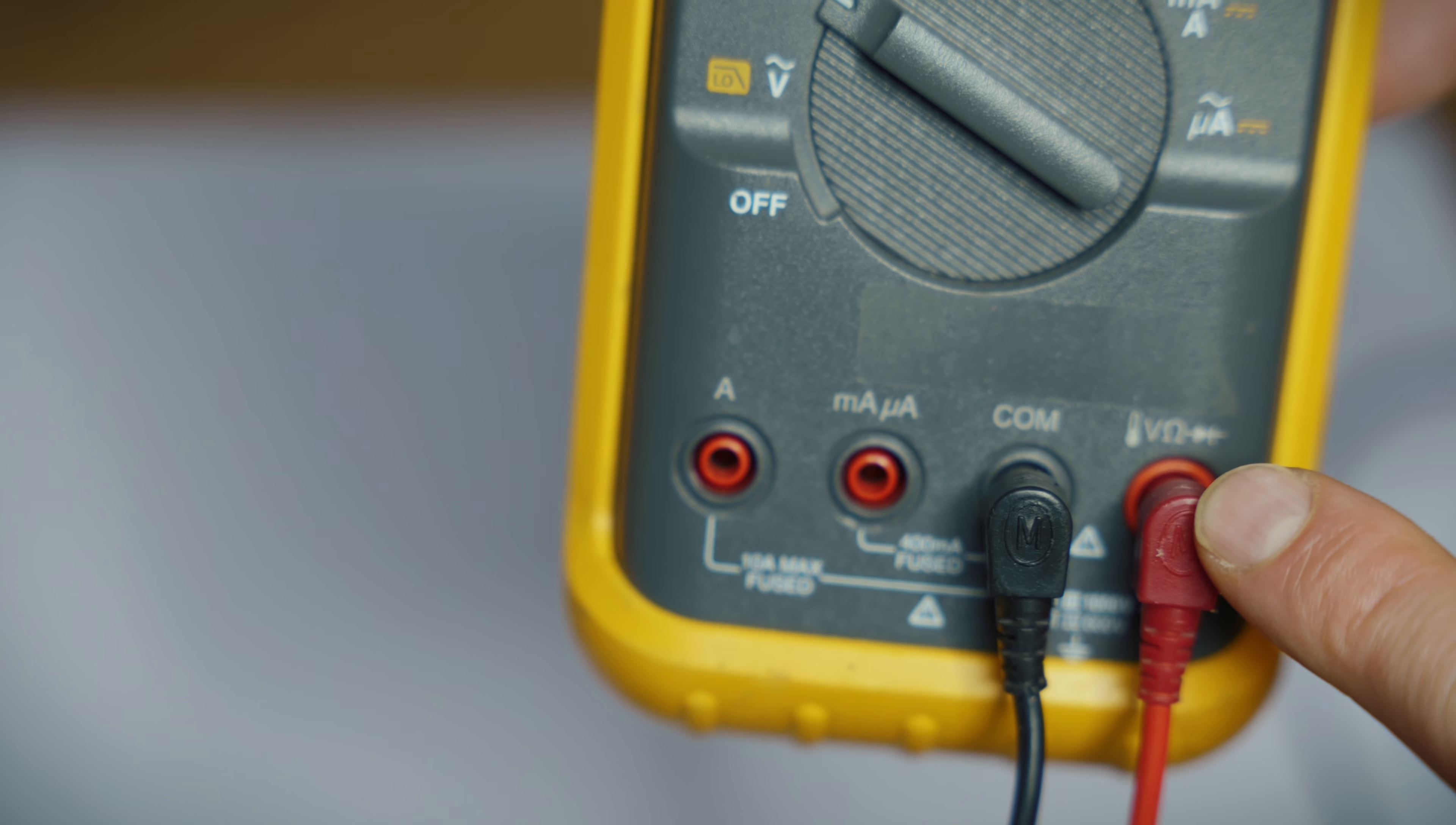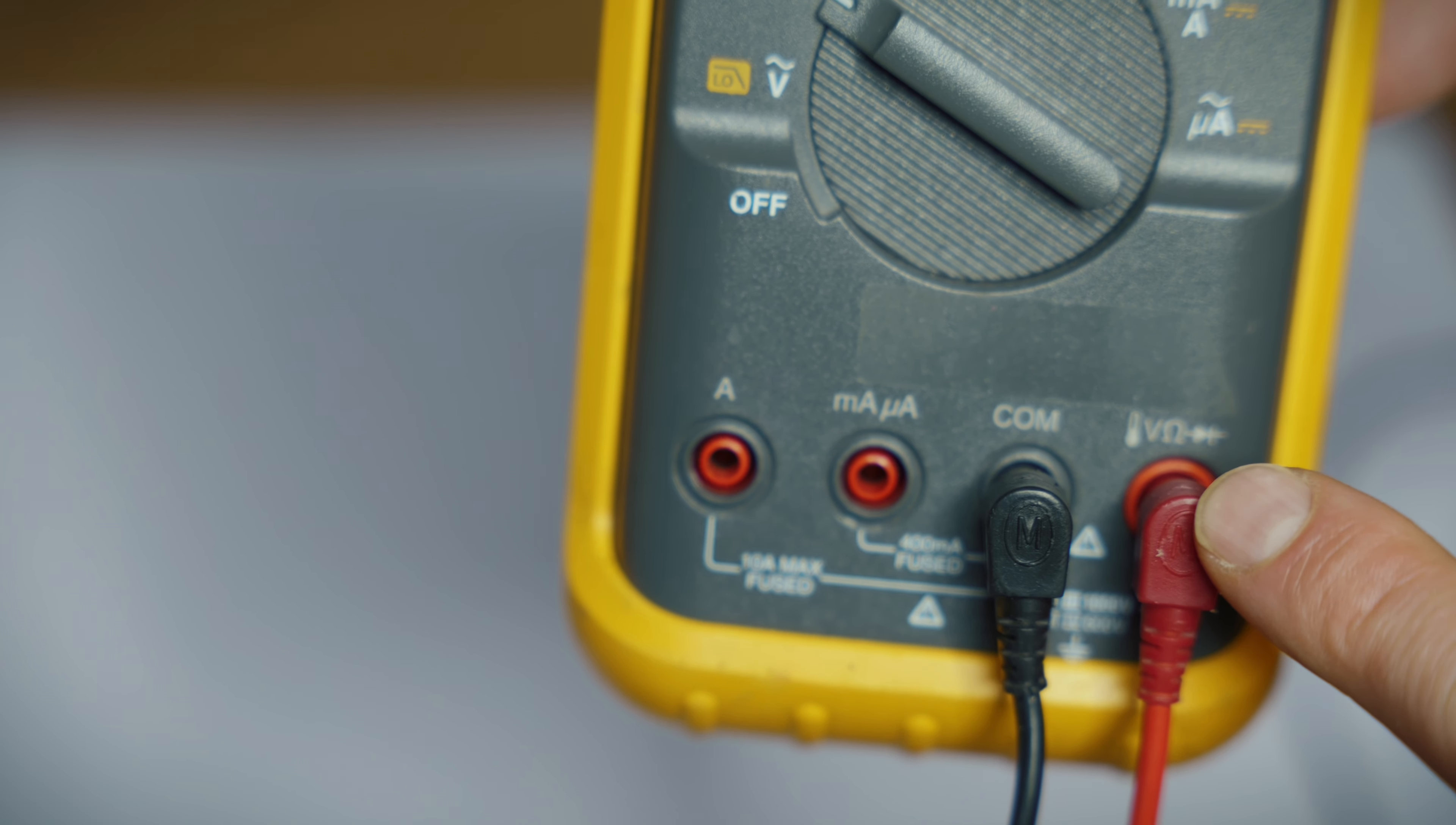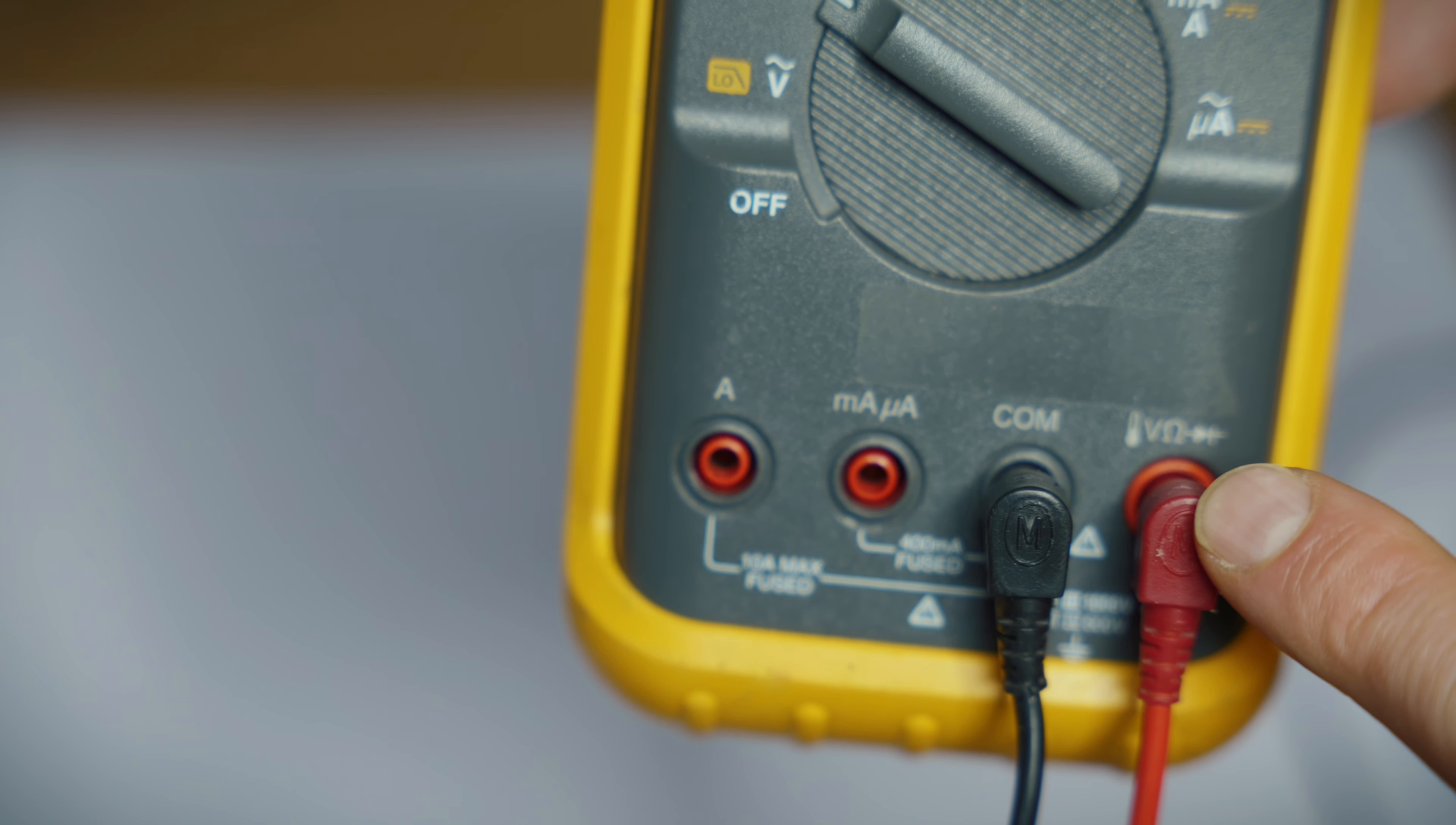So for our voltage checks, we're going to have the black always goes into common. And you'll see there's actually three different red ports. For our voltage checks, we're going to be in the one that says the volt, ohm, and diode jack.